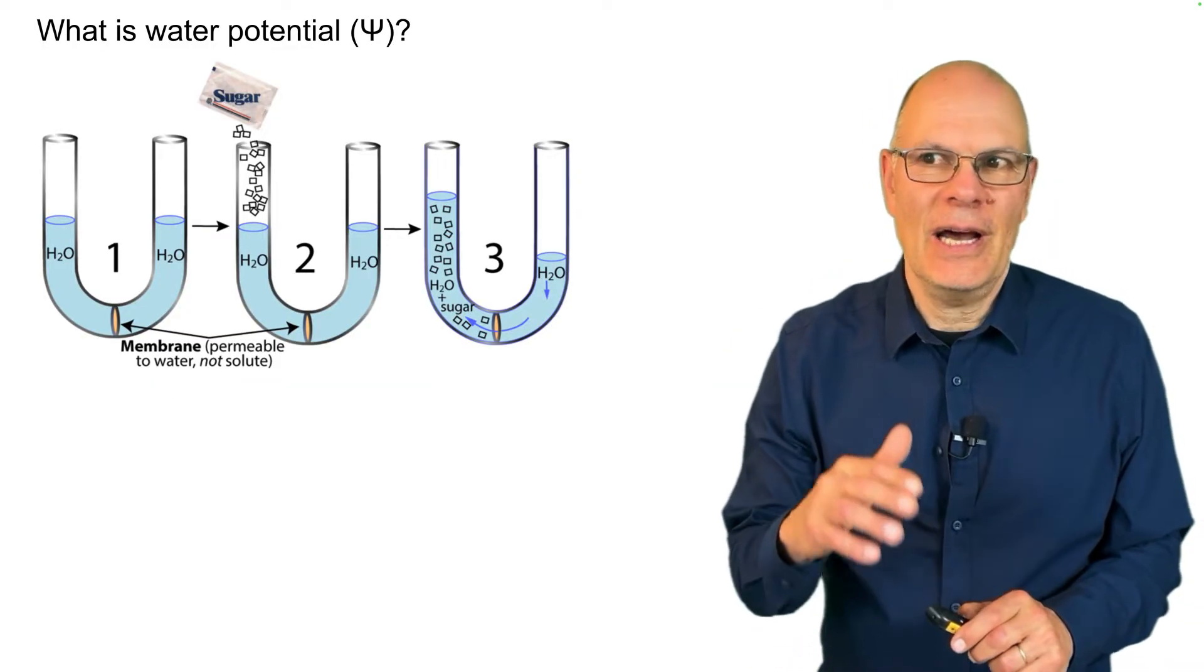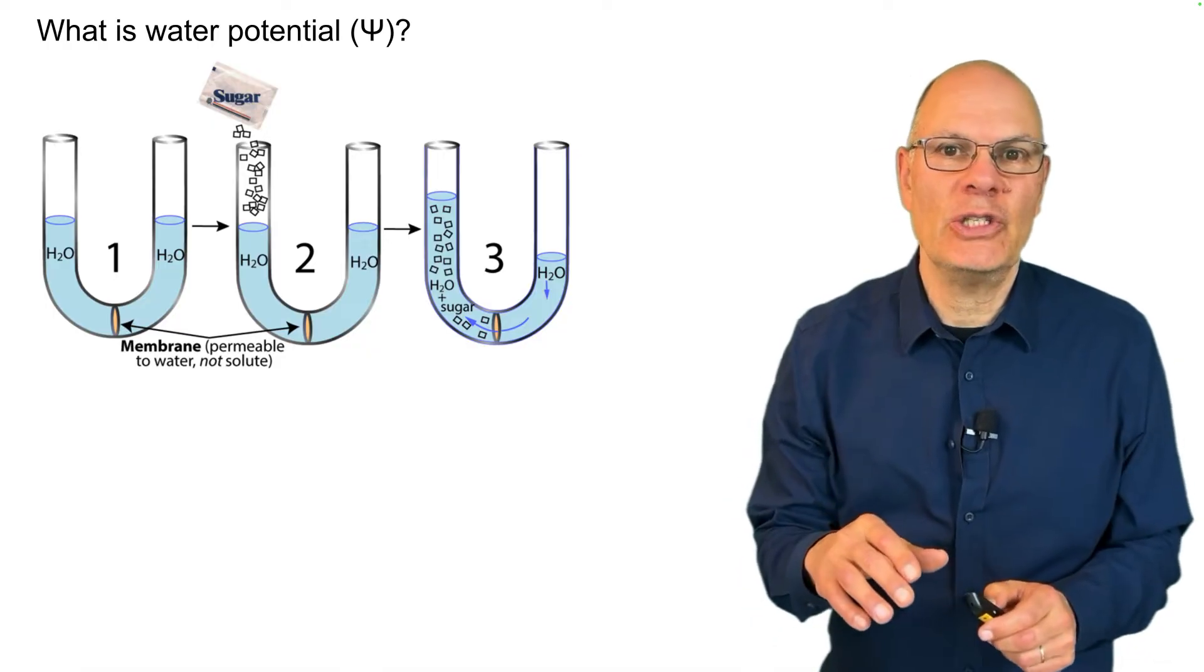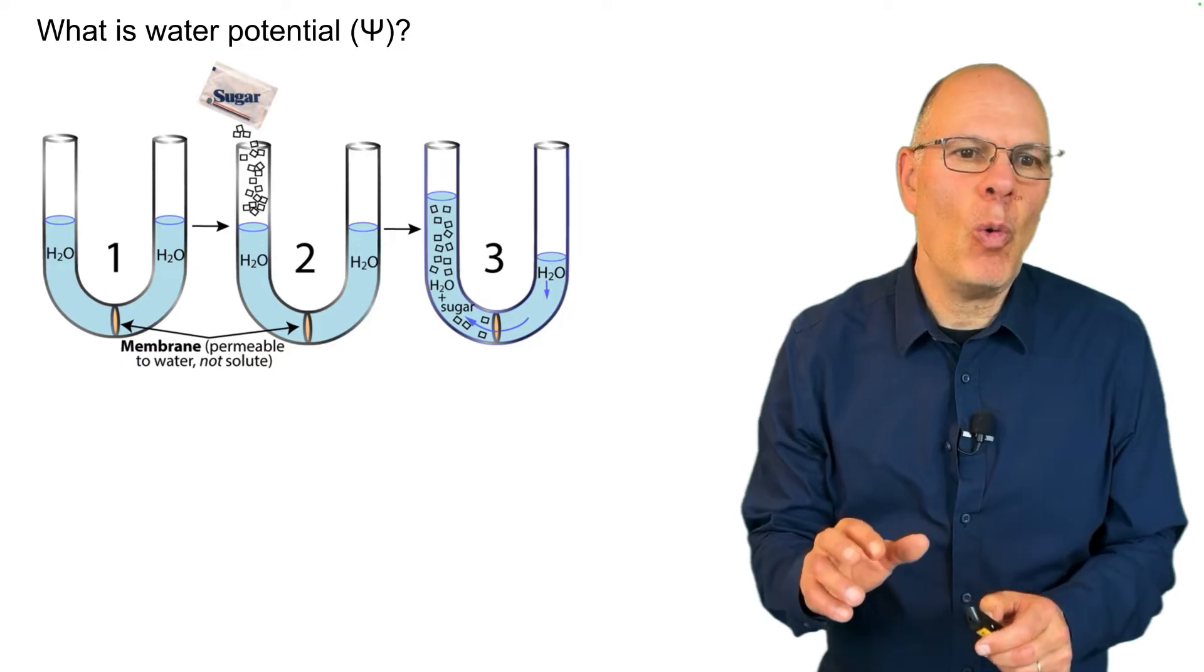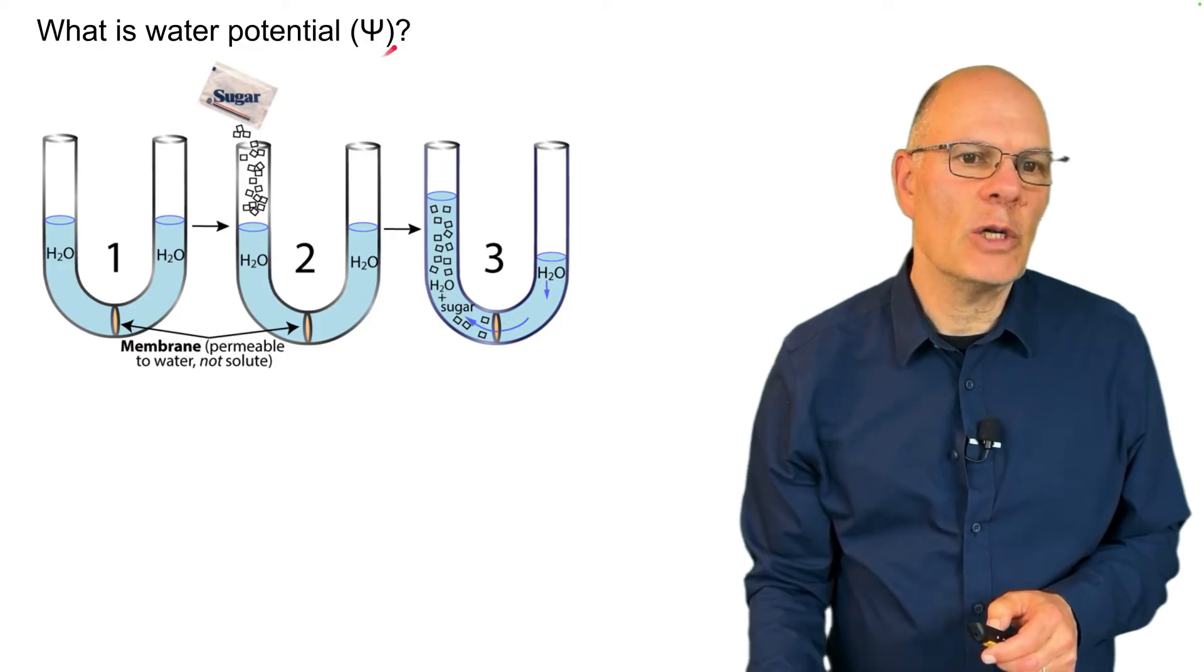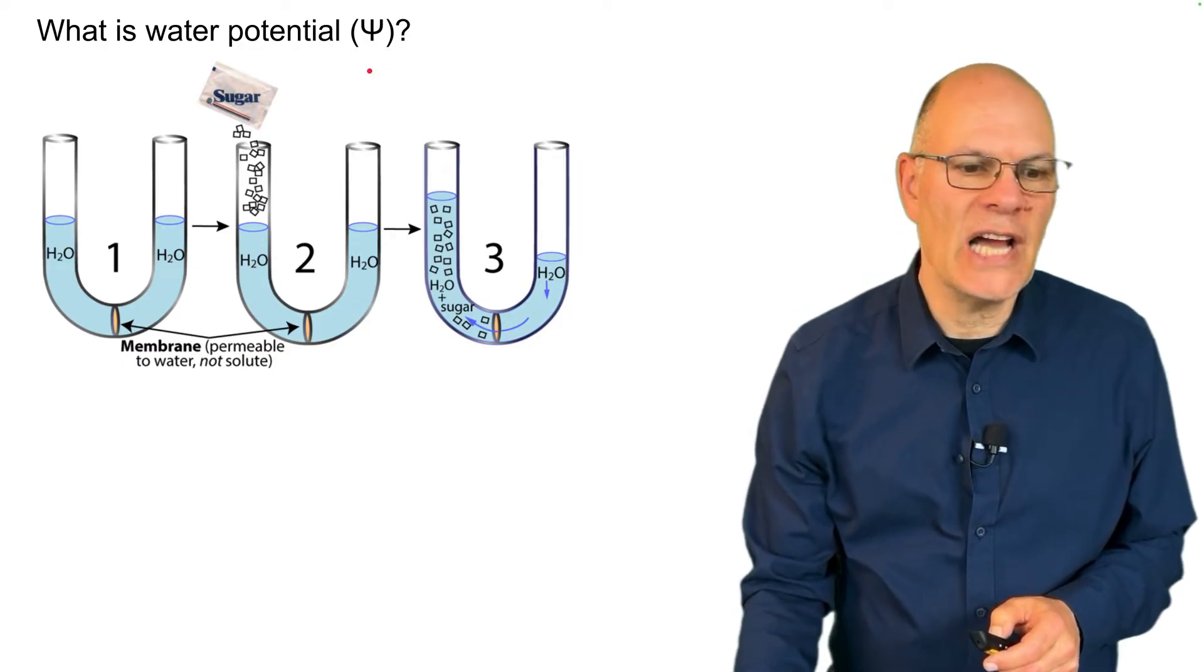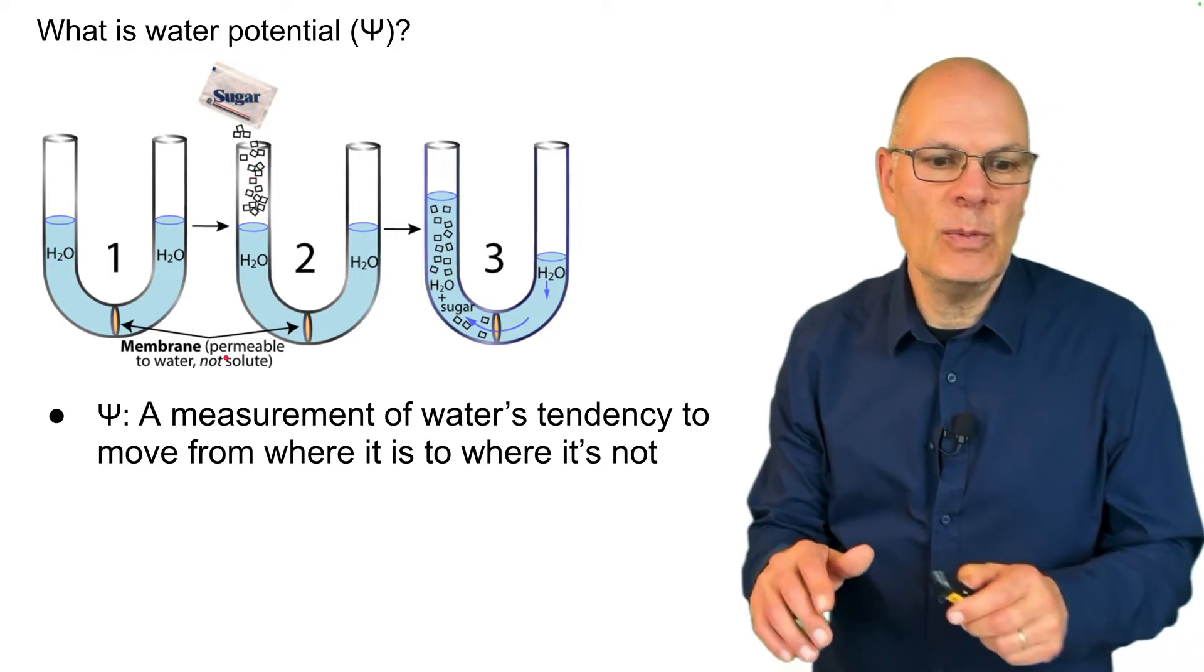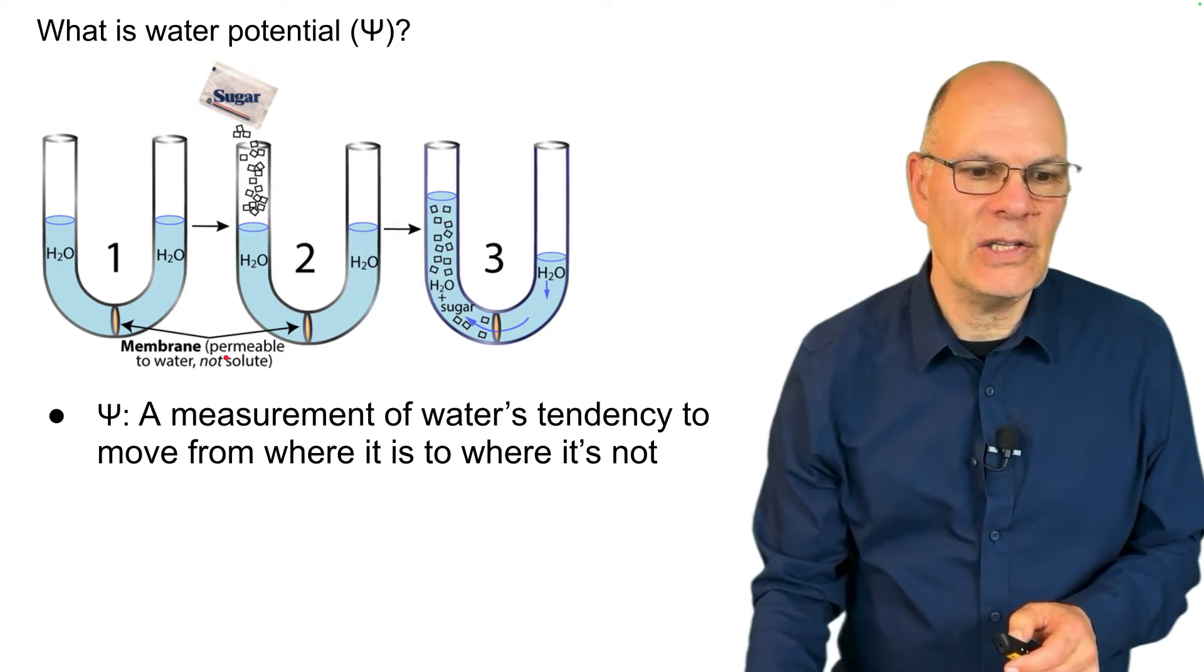Water potential is a concept that's really closely related to osmosis and osmotic pressure, but it's more quantitative. The symbol for water potential is this Greek letter psi (Ψ). Water potential is a measurement of water's tendency to move from where it is to where it's not.